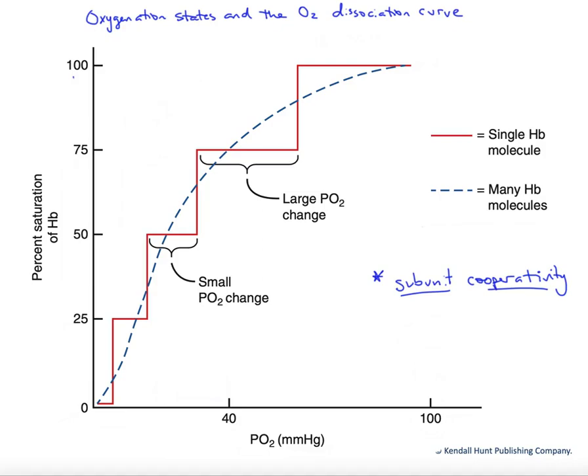In this graph, we're looking at the oxygenation states of hemoglobin and the O2 dissociation curve. This is an experimentally generated curve that can help us understand what hemoglobin is doing with regard to binding or releasing oxygen under a variety of partial pressures of oxygen.